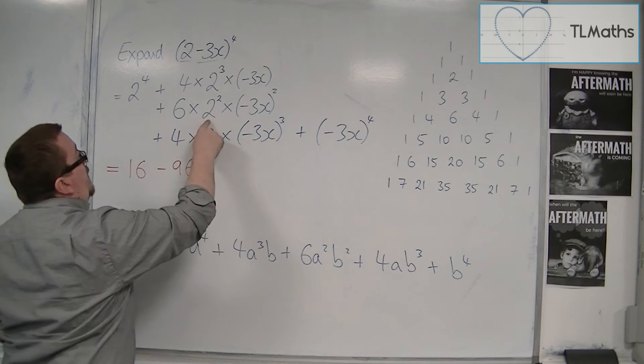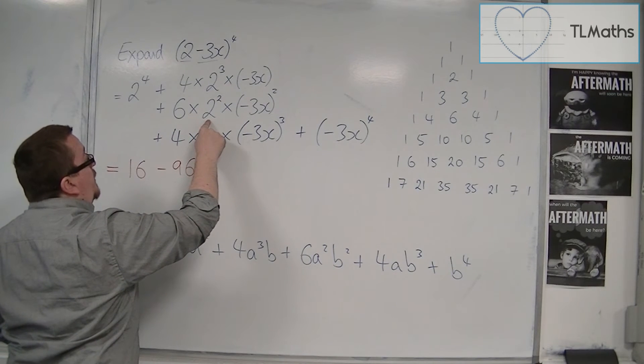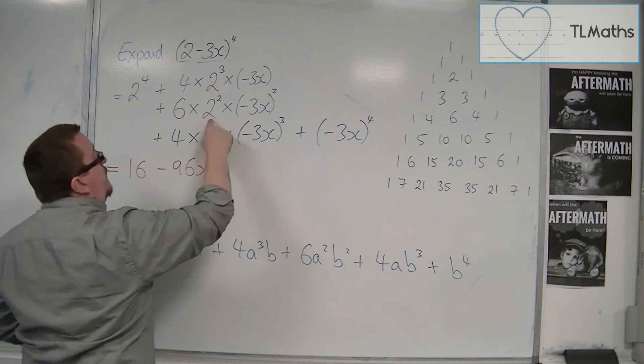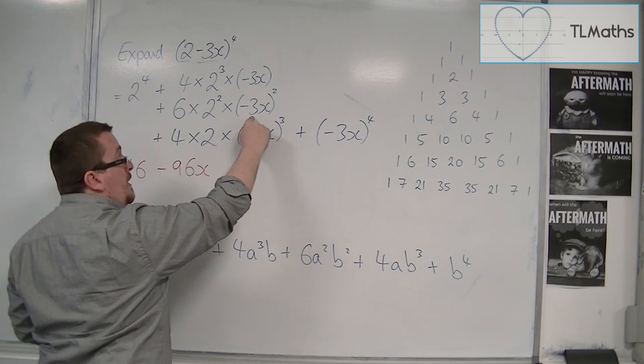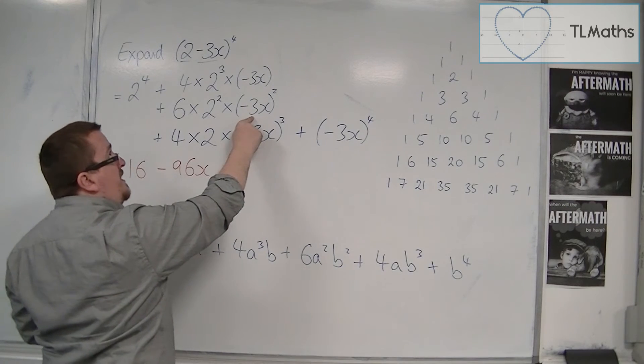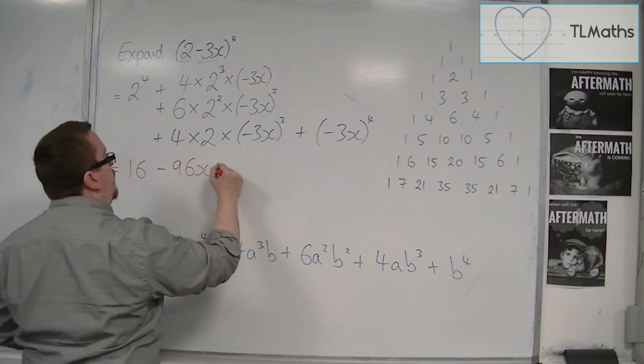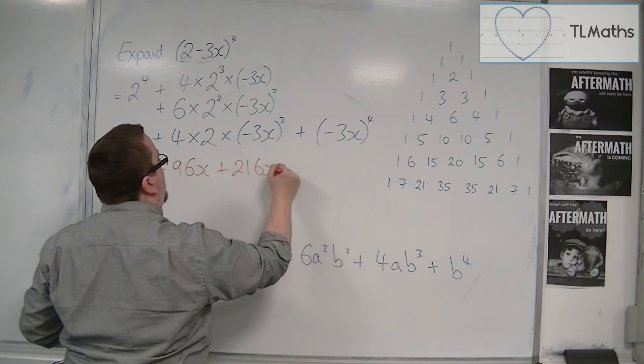Then we've got 6 times 4, so that's 24, times by 9, so 24 times 9 is 240, take 24, so 220, so 216, so plus 216x squared.